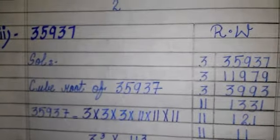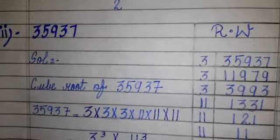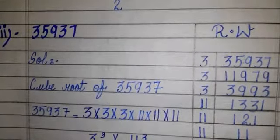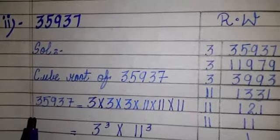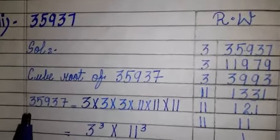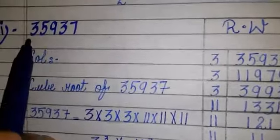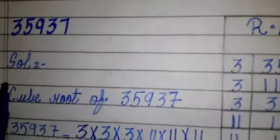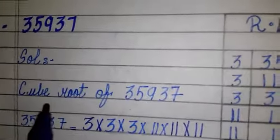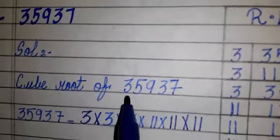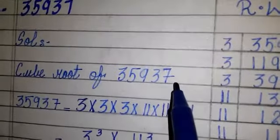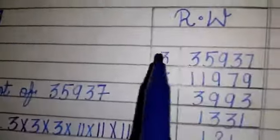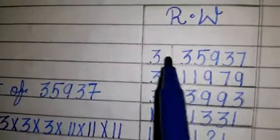We are solving exercise number 2.9, question number 4: find the cube root of 35937. Solution: to find the cube root of 35937, first we make its prime factors.